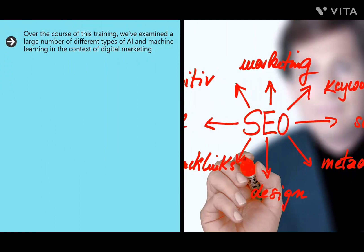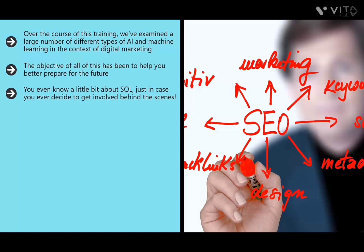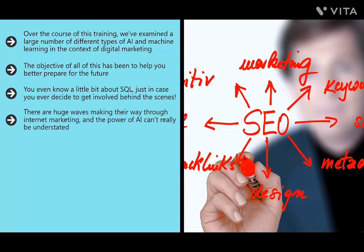Over the course of this training, we've examined a large number of different types of AI and machine learning in the context of digital marketing. You should start collecting as much data as possible, add schema markups to your site, use LSI, and consider a chatbot. But all of this is going to change a lot before it fully enters the scene. There are huge waves making their way through internet marketing, and the power of AI can't be understated.